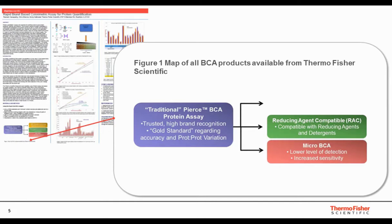We have traditional BCA, which is a highly trusted brand. We have the reducing agent compatible BCA, which is compatible with reducing agents, shown in green. We have the micro BCA, which is used to measure small protein concentrations — a high sensitivity product, shown in the box in red. And now we have another flavor: the Rapid Gold BCA, which features short incubation time and room temperature incubation.